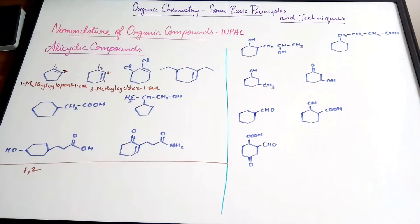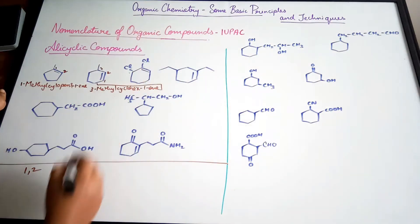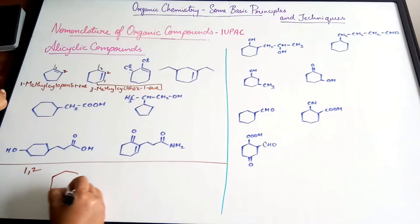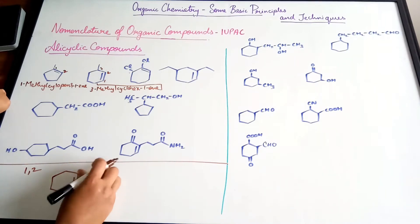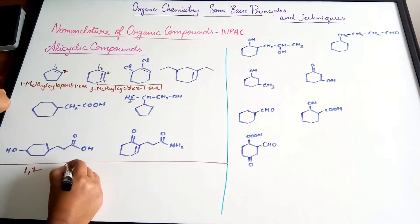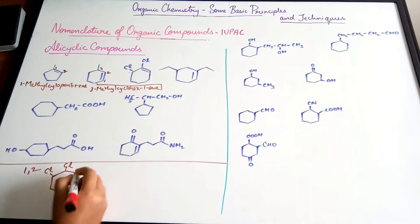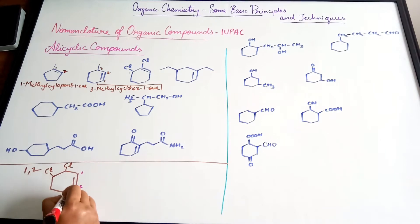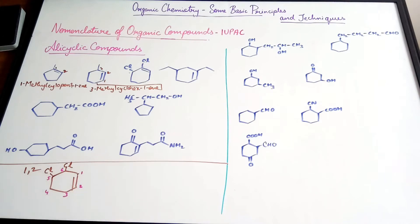When you have two substituents, things get a little different. Consider a structure with a double bond and two chlorine atoms. There are two ways to number this ring: the first way gives positions 1, 2, 3, 4, 5, and 6 so the double bond is at the first and second positions.